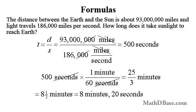Converting the result to minutes, using the fact that one minute equals 60 seconds, written in ratio form, we have 500 seconds times one minute per 60 seconds, which equals 25 over 3 minutes, or 8 and 1/3 minutes. Since 1/3 of a minute is equal to 20 seconds, sunlight would take about 8 minutes and 20 seconds to reach Earth.